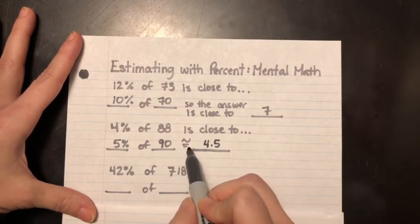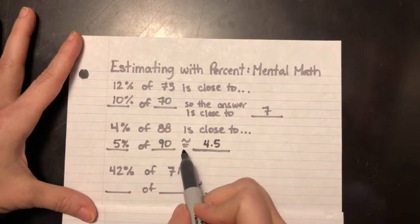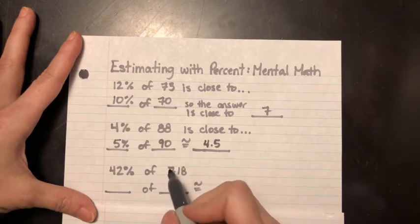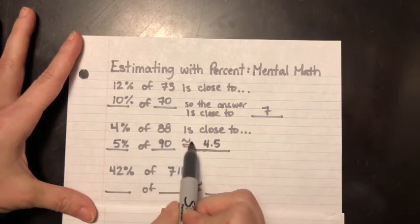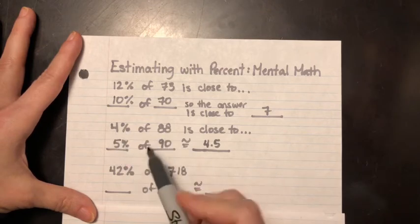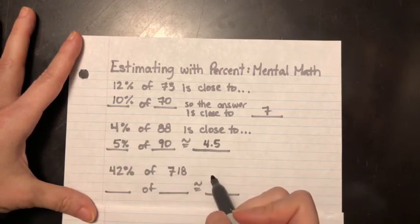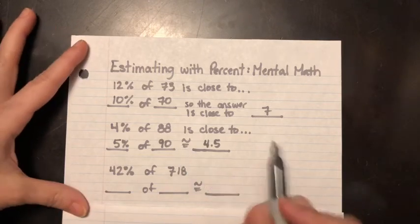So that is going to be your estimate here. Now take a look at this. Here I did the equal sign with this wavy line above. This means approximately when you have the equal sign and you've got the wavy line above, you're saying it is kind of close to being equal to this. So when I look at 4% of 88, it's going to be approximately 4.5. If I get my calculator and I calculate this, it's going to be somewhere close. That's why I have a little wavy line above there. It's my estimate.